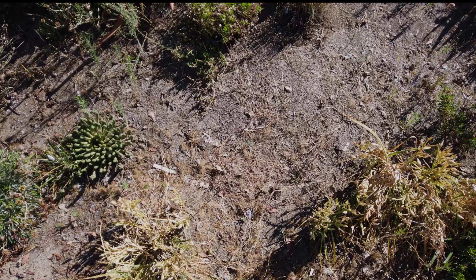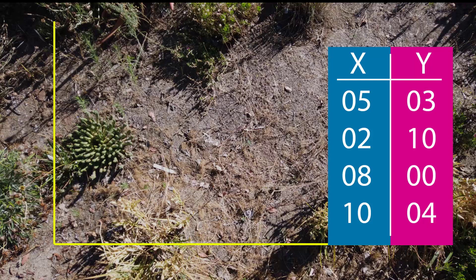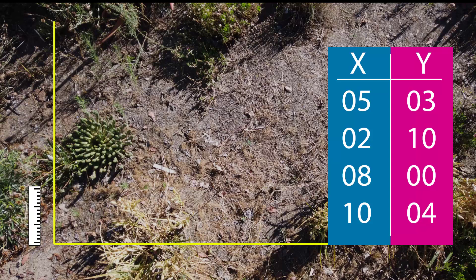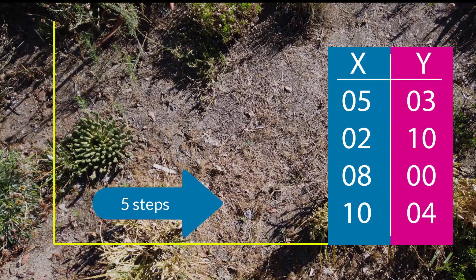We've decided to do a quadrat here, so this will be our x-axis and here's our y-axis. We have a random number table — we've decided this column is our x-coordinate and this one is our y-coordinate. We still need to decide on units. For a small planner, we might recommend centimeters or inches. For a larger area like this one, we could use feet. If you don't have a measuring tool on hand, you can use number of steps — that's what we'll be doing. Our x-coordinate is 5 and our y-coordinate is 3, so starting at 0, we'll go 5 this way and 3 this way.